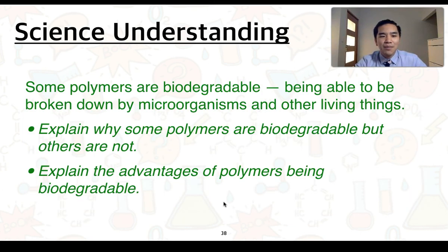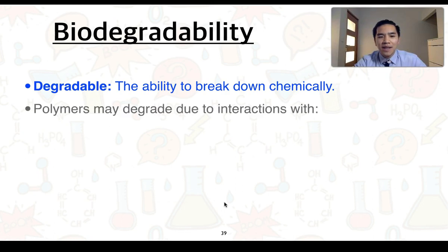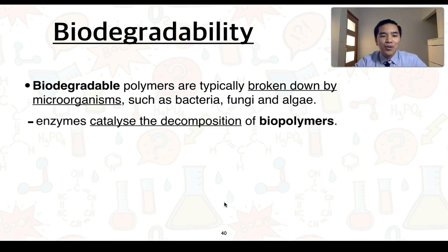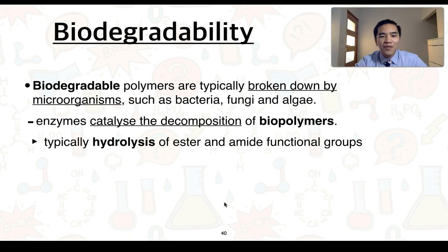This is our last science understanding: some polymers are biodegradable, meaning they can be broken down by microorganisms and other living things. We need to explain why some polymers are biodegradable but others are not, and explain the advantages of biodegradable polymers. The word 'degradable' means the ability to break down chemically, and polymers may degrade due to interactions with chemicals, heat, light, or organisms. Biodegradable polymers are typically broken down by microorganisms — including bacteria, fungi, and algae — which produce enzymes that catalyse the decomposition. These reactions typically involve the hydrolysis of ester and amine functional groups, especially in polymers derived from natural materials such as carbohydrates, triglycerides and proteins.